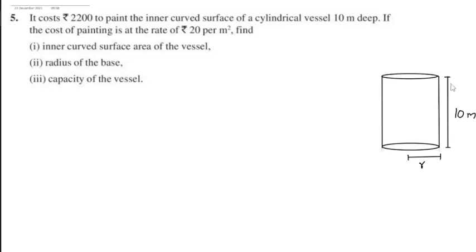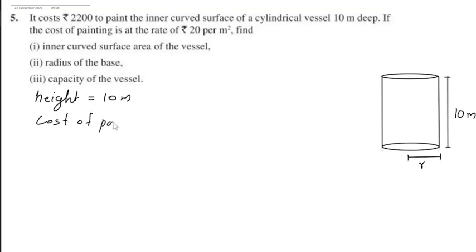This cylindrical vessel is 10 meters deep. We have to find the radius of the base. The rate of cost of painting is given as Rs 20 per meter square. The total cost of painting the inner curved surface is given as Rs 2200. The height is 10 meters, and the cost of painting 1 meter square is Rs 20.